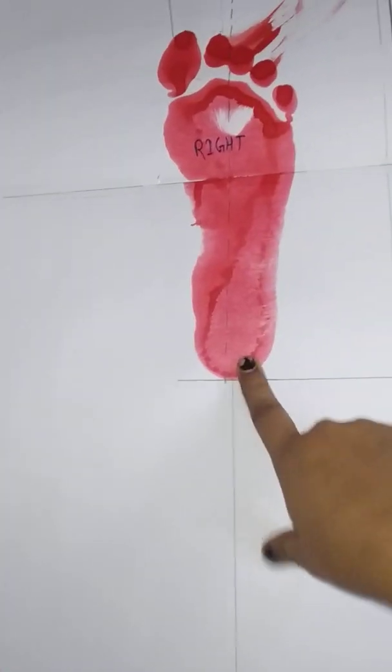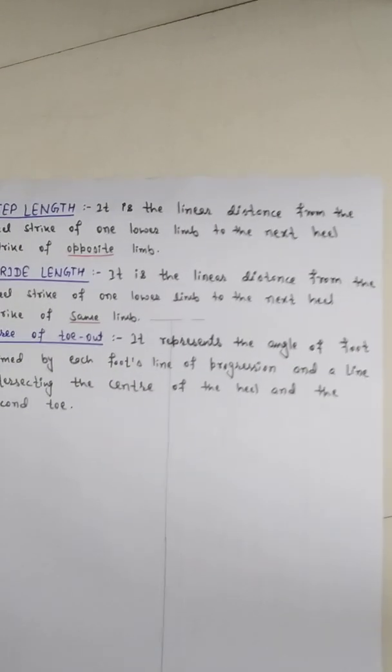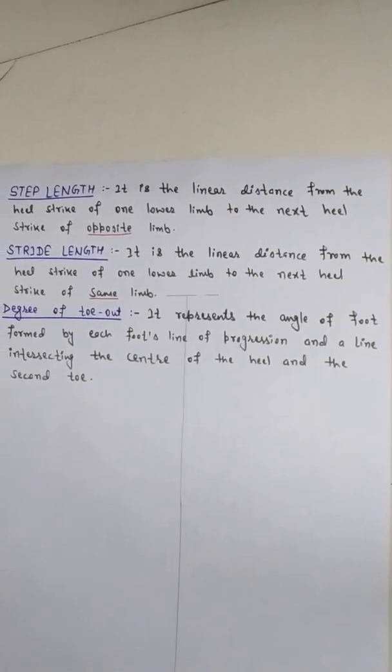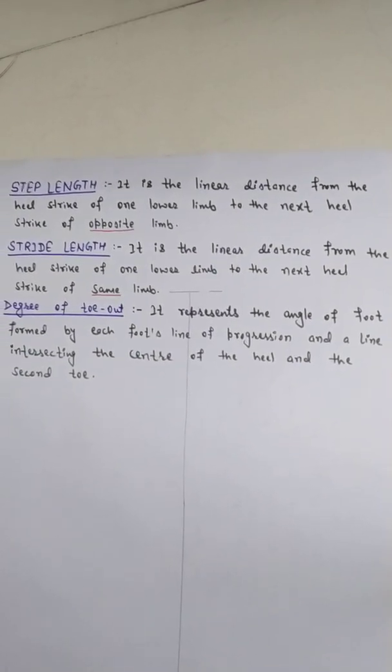So step length is the linear distance between the heel of the left limb and the heel of the right limb — specifically the linear distance, not any diagonal or other distance. Now, what is stride length? Stride length is the linear distance from the heel strike of one lower limb to the next heel strike of the same limb.